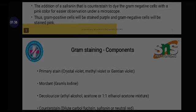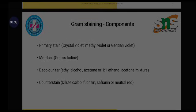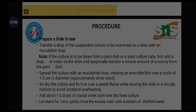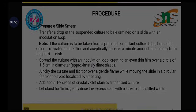The four main components used in Gram staining are: the primary stain — crystal violet; the mordant — Gram's iodine; the decolorizer — ethyl alcohol or ethanol; and the counterstain — safranin.